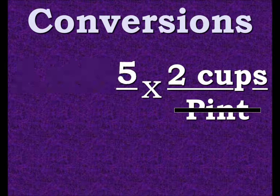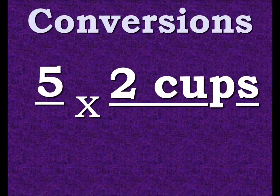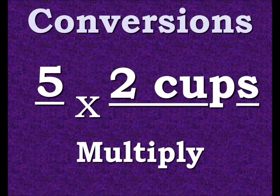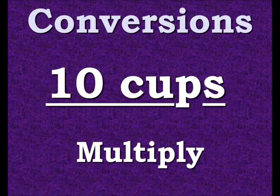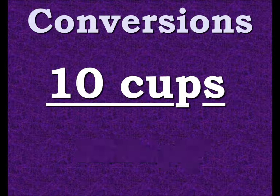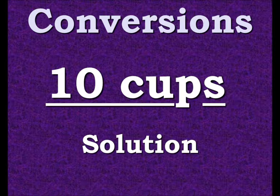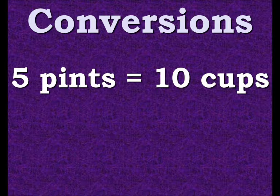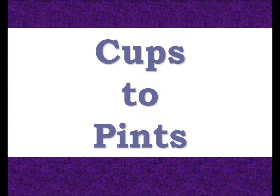The labels cancel out and we're left with five times two cups, so now we multiply. We end up with 10 cups. So five pints equals 10 cups. Now let's convert from cups back to pints.